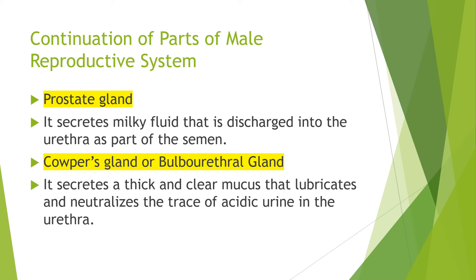The second gland is the prostate gland — it secretes milky fluid that is discharged into the urethra as part of the semen. We also have the Cowper's gland, also known as the bulbo-urethral gland — it secretes a thick and clear mucus that lubricates and neutralizes the trace of acidic urine in the urethra.